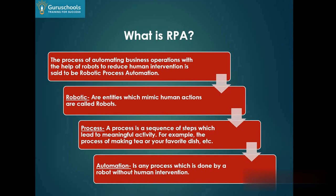Now we will move to RPA. What is RPA? RPA is Robotic Process Automation. It will automate the day-to-day tasks which people are performing while working their jobs. Robotics means those entities which mimic human actions are called robots. Whatever task is currently being done by a human, the same task can be replicated with the help of robots — instead of humans, the robots will perform that particular task.